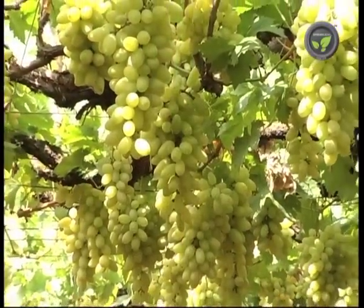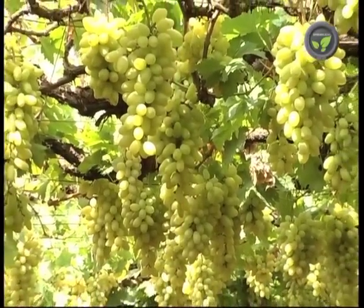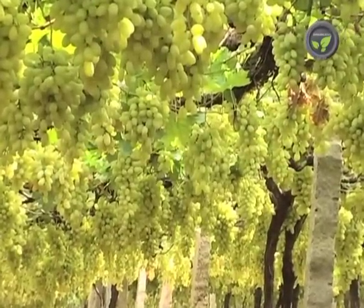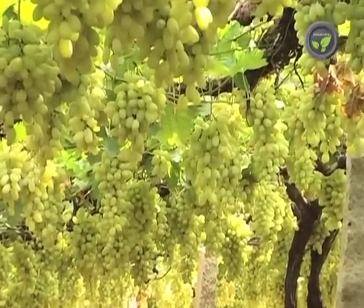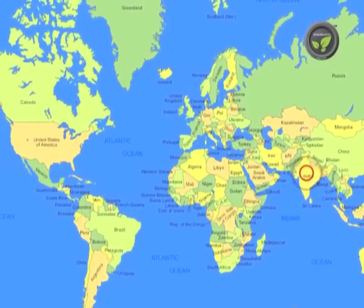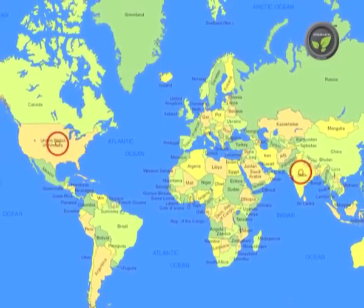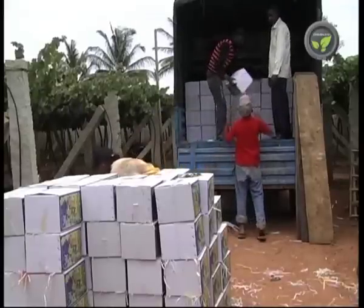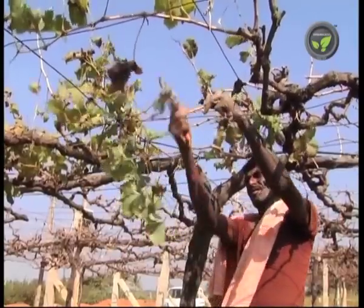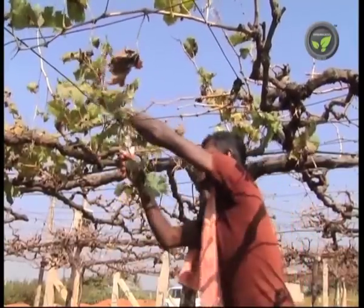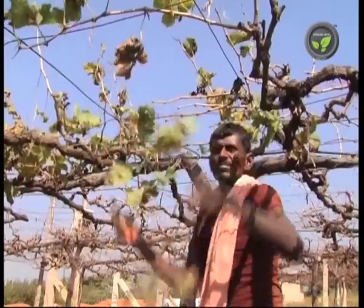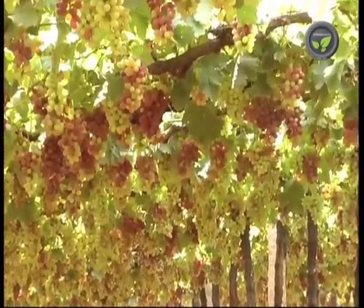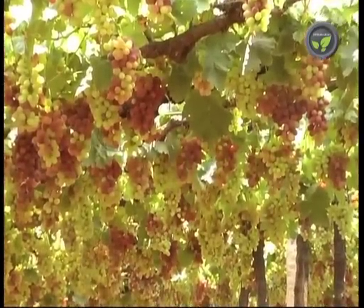We get higher yield per unit area than any other country in the world. The average yield in South India is 10 to 14 tons per acre. India stands second after the USA in total grape production, but our share in world trade is negligible. We have the benefit of climate to get a good crop for an extended period in a season by adjusting pruning dates. Hence, there is a lot of scope for export-oriented grape cultivation.